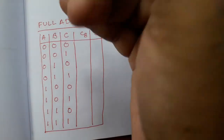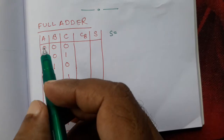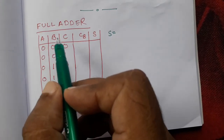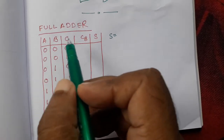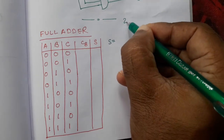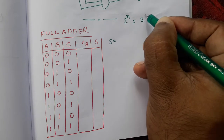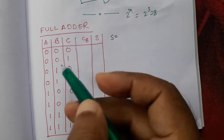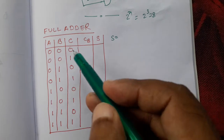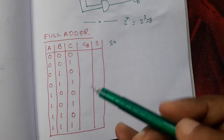The next topic is full adder. For a full adder we need 3 bits: A, B, and C. For these 3 bits we will get 2 to the power N inputs. Because N is 3, that is 8. So we will get 8 inputs from 0 to 7, that is 000, 001, and so on up to 111.